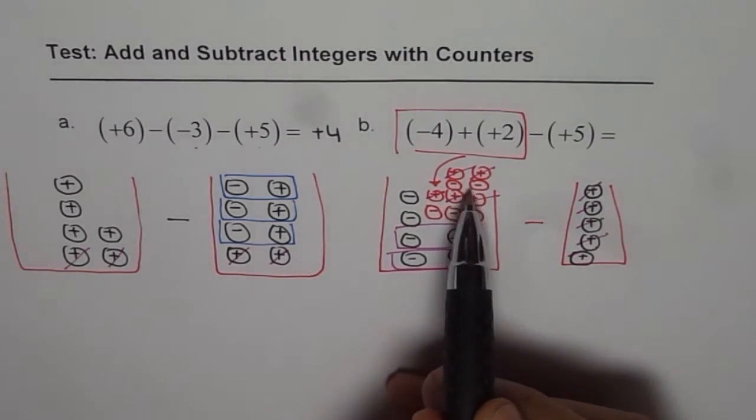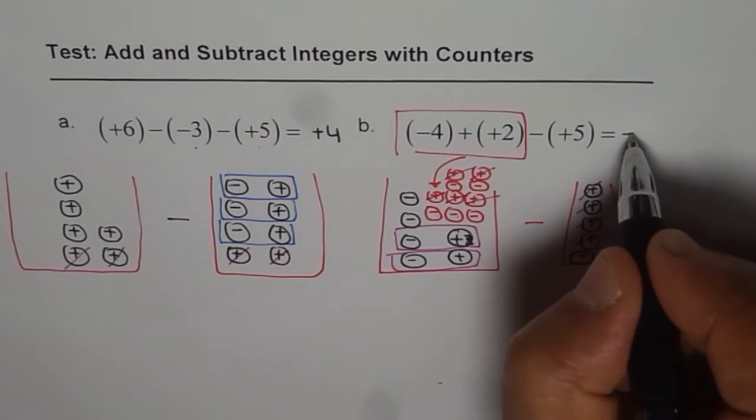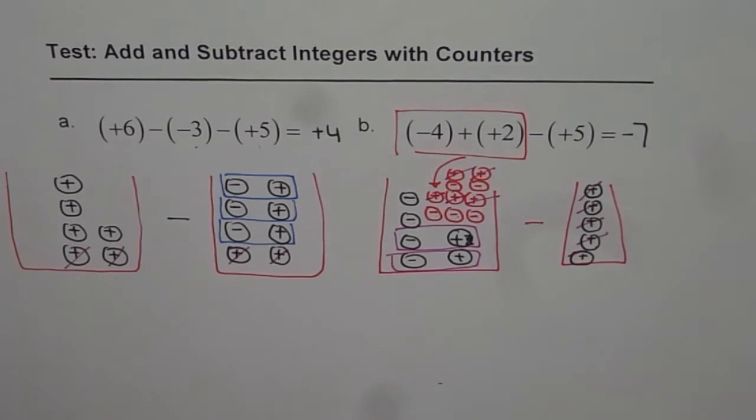What remains is the solution. The solution is 1, 2, 3, 4, 5, 6, 7. So (-7) is the answer. So that is how we can solve these types of questions using counters.